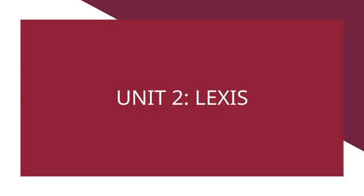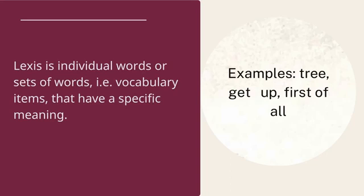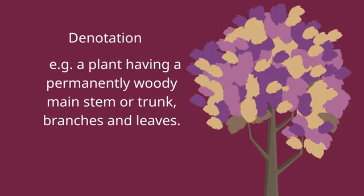Lexis. Lexis refers to individual words or sets of words, i.e. vocabulary items, that have a specific meaning. Examples include: tree, get up, first of all. Vocabulary items have different kinds of meaning; they may describe the thing or idea of the item. Denotation, e.g.: a plant having a permanently woody main stem or trunk, branches, and leaves.